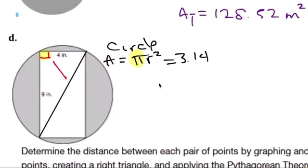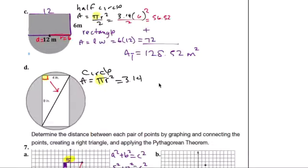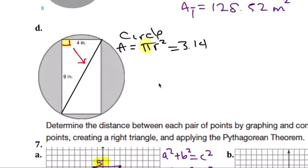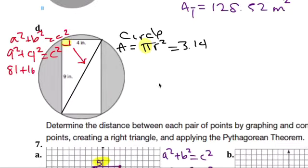And this is pointing to C. C is unknown. So I'm going to do a little a squared plus b squared equals c squared here. 9 squared plus 4 squared equals the unknown c. 81 plus 16 equals the c squared. 97 equals the c squared. Take the square root. That's close to 10, so it's probably 9.8. Yep, it is 9.8.